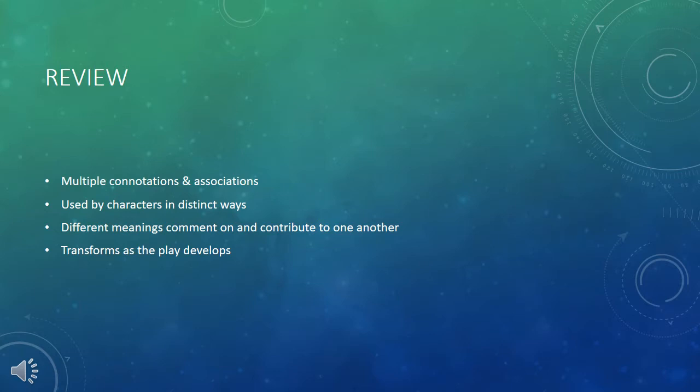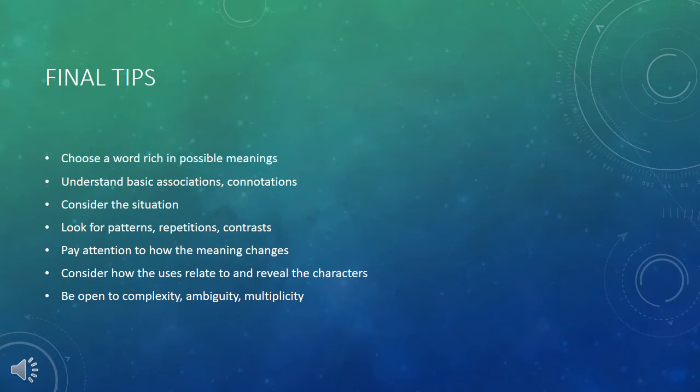One character uses moon in a positive way, another in a negative way, another to be associated with desire, another with secrecy — all of these meanings are playing together. The meaning of the word moon transforms as the play develops, taking on new meanings and changing just as the characters change. So we want to always be attentive to and open to the complexity of any image Shakespeare uses, not trying to reduce it to one single meaning, but being open to all of its richness.